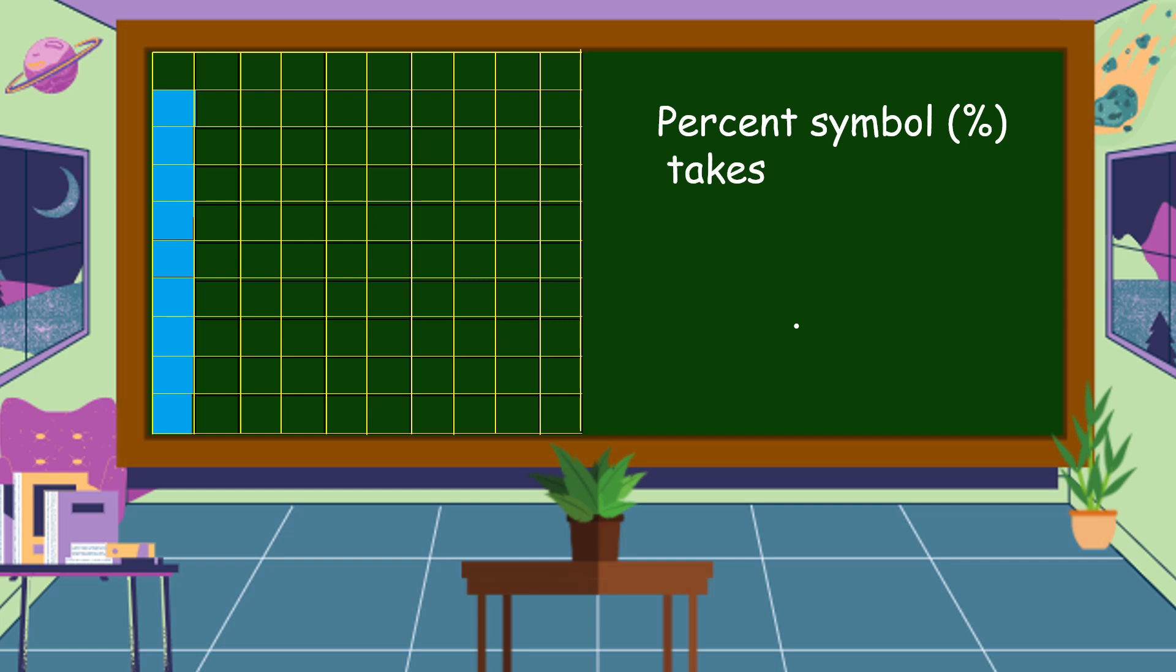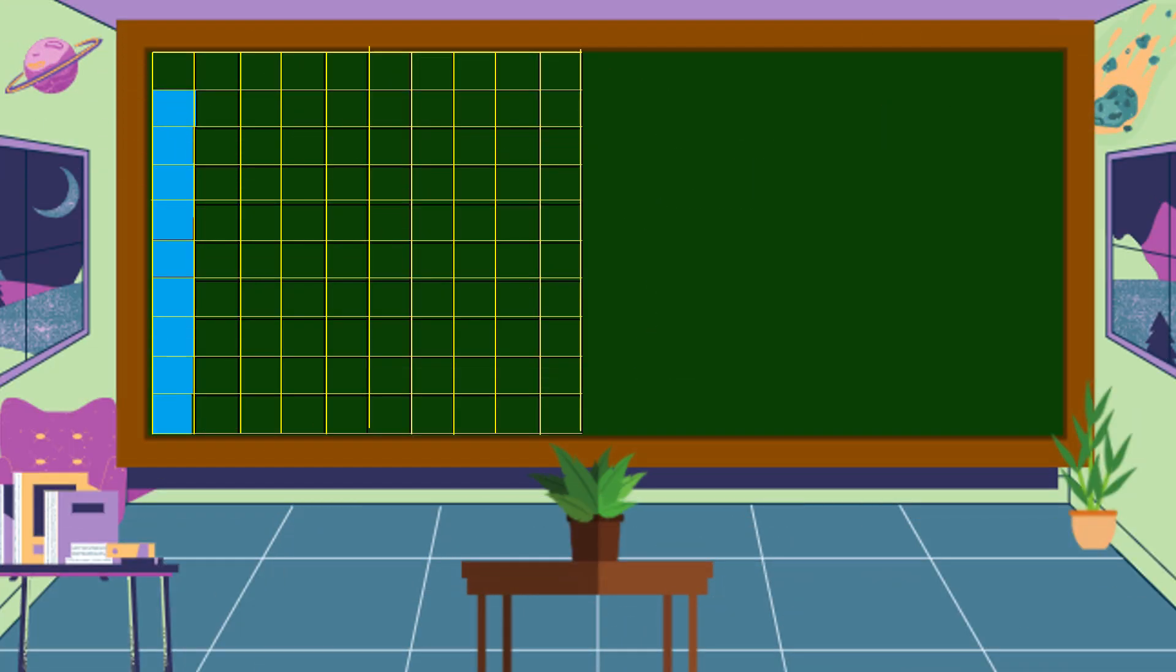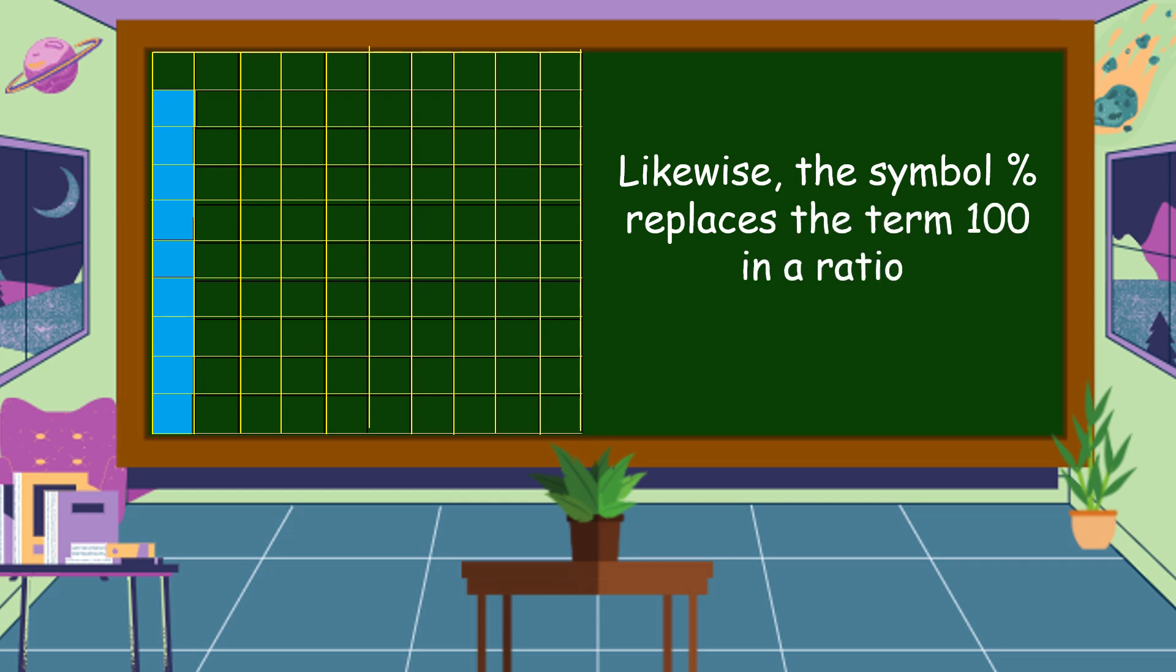Percent symbol takes place of the denominator 100 in a fraction. That is why 9 over 100 is equal to 9 percent. Likewise, the symbol percent replaces the term 100 in a ratio. So 9 is to 100 is 9 percent.